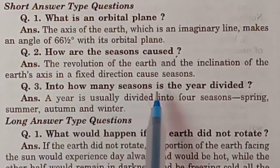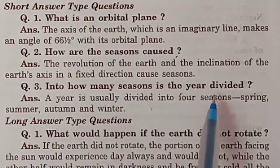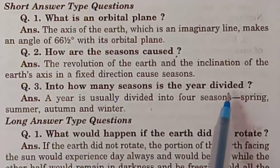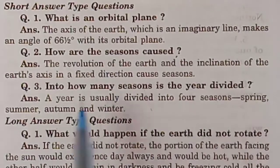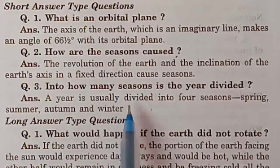Into how many seasons is the year divided? The year is usually divided into four seasons: spring, summer, autumn, and winter.